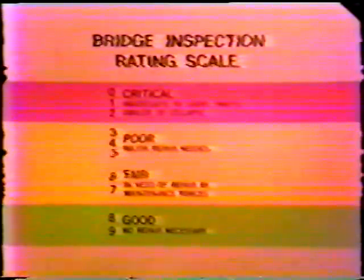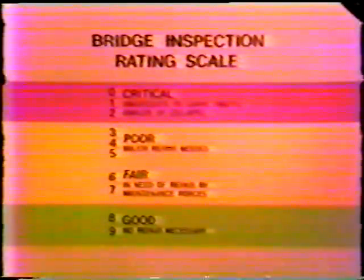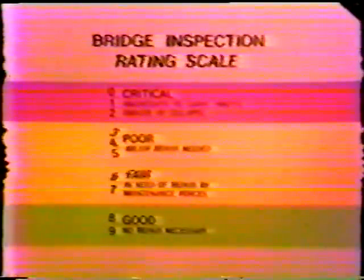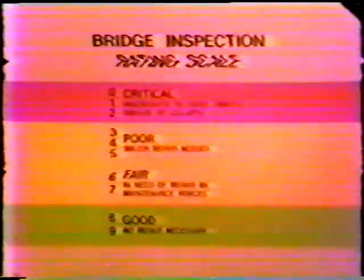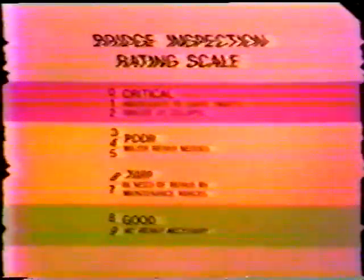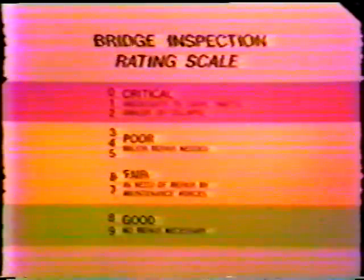0, 1, and 2 are critical. 3, 4, and 5 are poor. 6 and 7 are fair. And 8 and 9 are good. With these general terms in mind, it should be easier to assign a condition number.